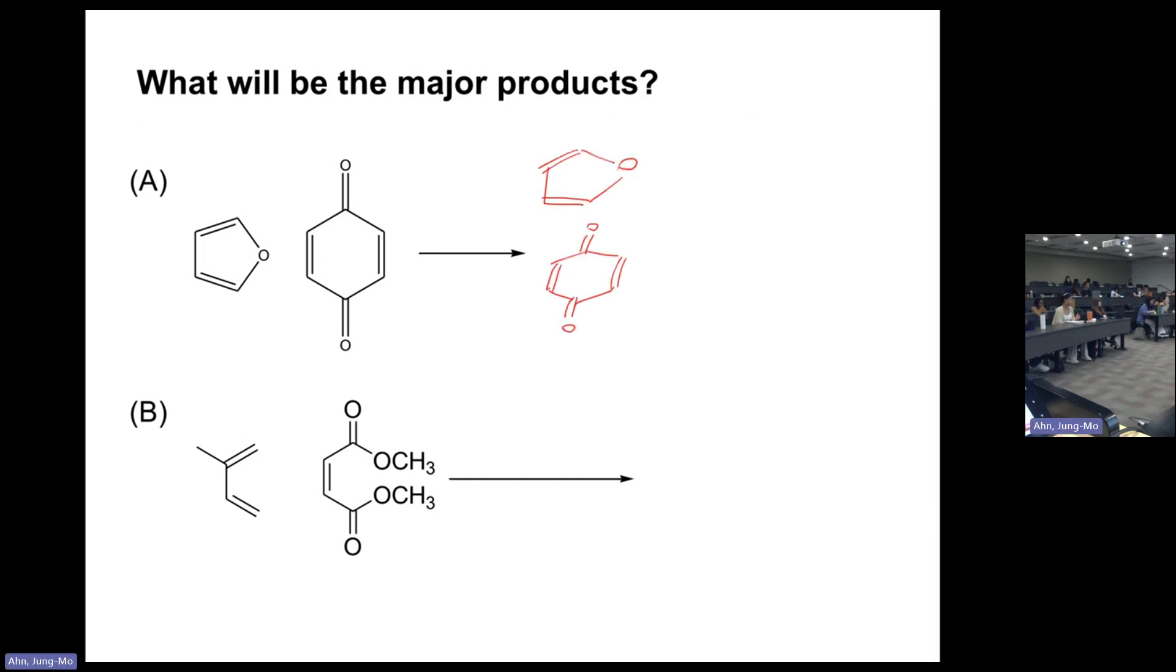We have to redraw the molecules so the double bonds can align to form a six-membered ring. Why did I draw them this way? Because of the endo rule. We want to have electron-withdrawing groups making secondary interactions with the pi system. That's why I put these two carbonyls right under the pi system, so it could make an endo product.